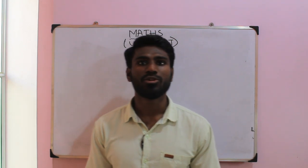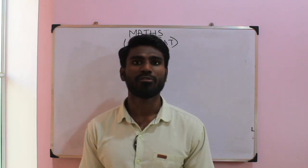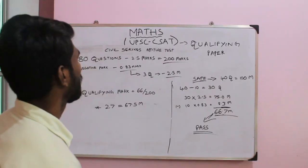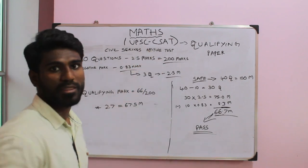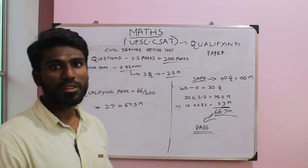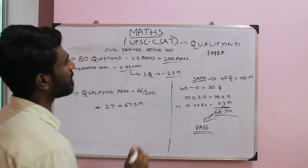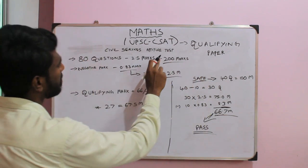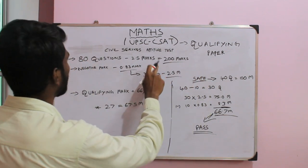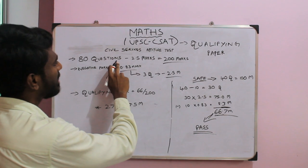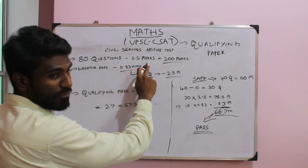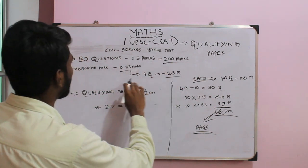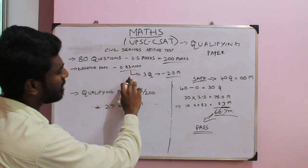Now let's talk about UPSC. One paper is C-SAT. C-SAT is a qualifying paper — a civil service aptitude test. There are total 80 questions. Each question carries 2.5 marks, so in total there are 200 marks. If there are negative marks, the penalty is 0.83 marks.